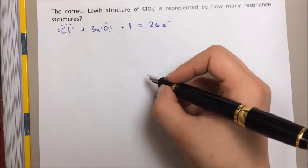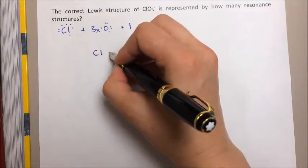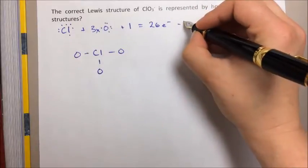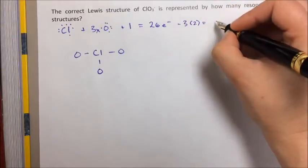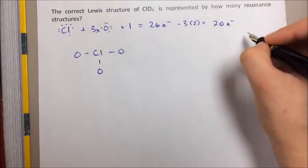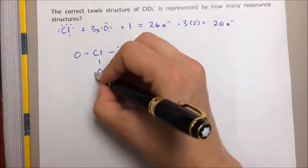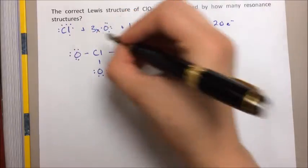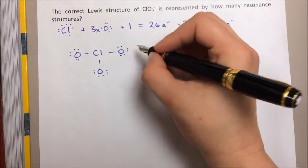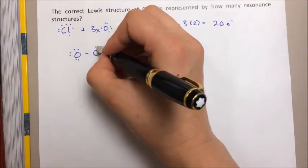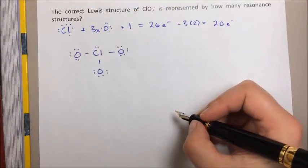We're going to use chlorine as our central atom, connect the oxygens with single bonds, remove those electrons from the valence pool, giving us 20 electrons left. That's enough to fill the octets of the oxygen atoms, which is what we're going to do first because they're more electronegative. And we'll still have two electrons left. We can put those on the center chlorine atom.